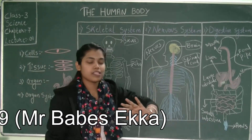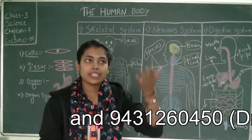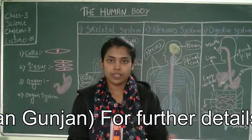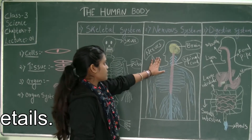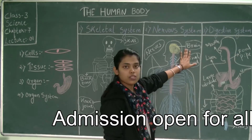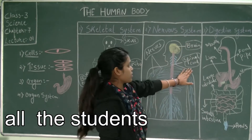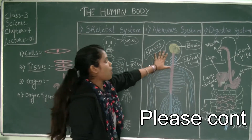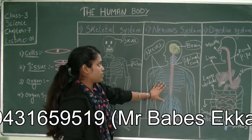The nervous system is also called the control house because it controls the activity and action of the body. The nervous system consists of the brain — which is also known as the control house of the body — the spinal cord, and the nerves. All three together make up a proper nervous system.